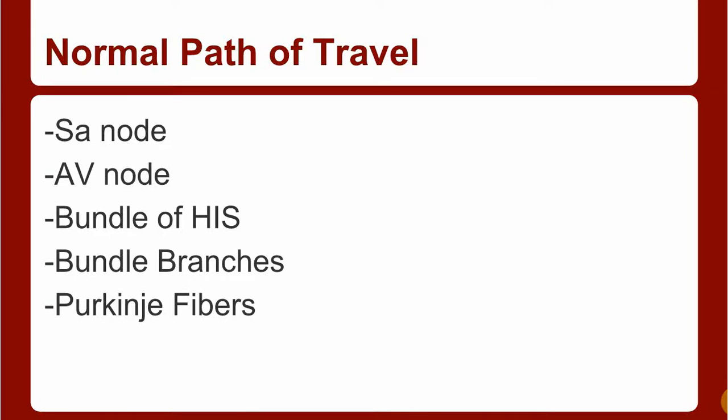The normal path of electricity travel must be known in order to understand what an axis is. We have the sinoatrial node, the pacemaker goes to the AV node, bundle of His, bundle branches, and finishes out in the Purkinje fibers.